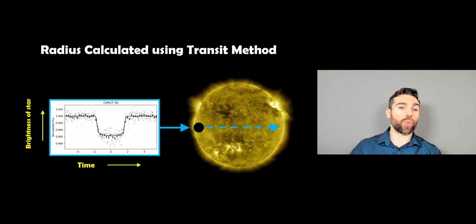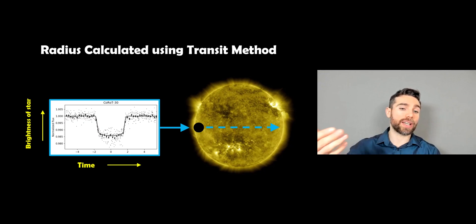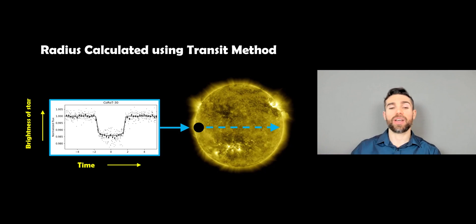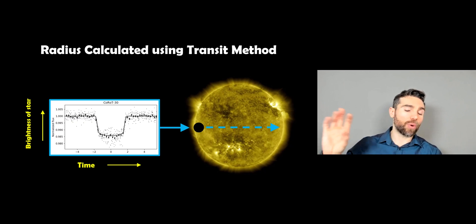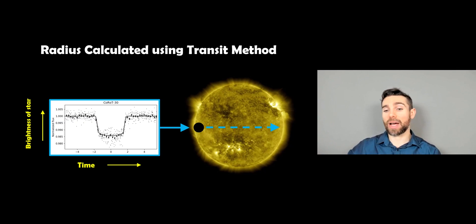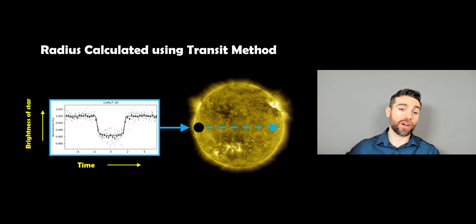The radius is calculated using the transit method. If a planet is oriented such that it passes in front of its star as it orbits, we see a dip in the brightness of that star. We can't measure the planet directly, but we can measure how bright the star is. When the planet passes in front, it blocks out some light. The bigger the planet, the bigger the dip in brightness — that's how we get the size of the planet.